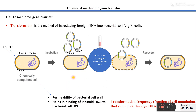Now I would like to talk about different chemical methods of gene transfer. The most important chemical method is CaCl2-mediated gene transfer, also known as bacterial transformation. This is a method of introducing foreign DNA into bacterial cells — specifically E. coli. In this process, the first step is making a chemically competent cell by treating the bacterial cell with CaCl2 solution. CaCl2 breaks into Ca2+ ions and Cl- ions.